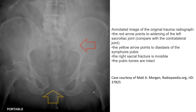This is an example of it. The red arrow points to widening of the left sacroiliac joint compared with the contralateral side. The yellow arrow points to diastasis of the symphysis pubis. The right sacral junction is visible. The pubic bone is intact.